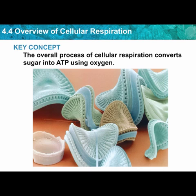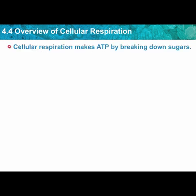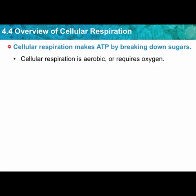Overview of cellular respiration: the key concept is that the overall process converts sugar created in photosynthesis into ATP, the energy of life, using oxygen. Cellular respiration makes ATP by breaking down sugars created in photosynthesis. It is aerobic, meaning it requires oxygen, and the aerobic stages take place in the mitochondria, the powerhouse of the cell.